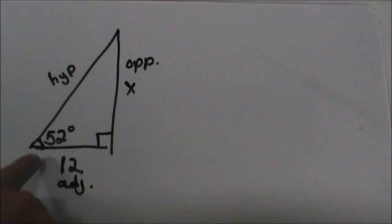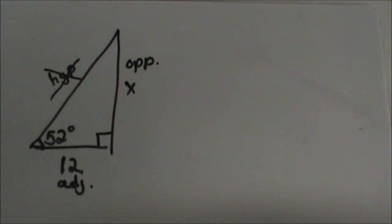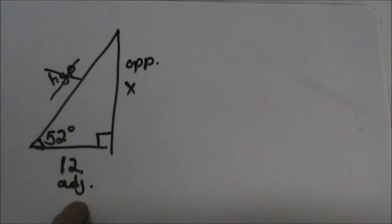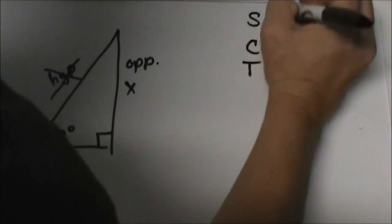Okay, so which two sides are we using? Well there's no marking, there's no length, and our x is not on the hypotenuse, so we're not going to use hypotenuse. We're going to use the opposite side and the adjacent side. So go back and look at your reference, which trig ratio - and I'll jot them up here.